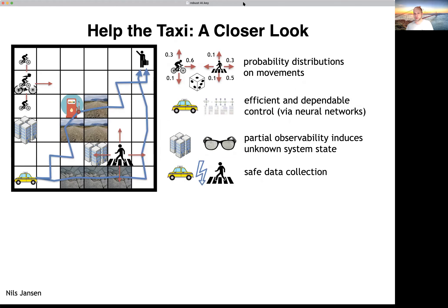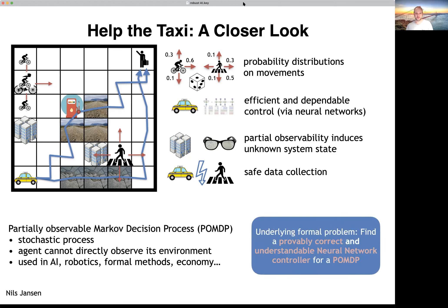We can capture such goals in temporal logic constraints or expected cost specifications, and we want both: a policy for the taxi that is safe and cost-optimal, accounting for all the randomness and partial information. We assume probability distributions on movements of cyclists and pedestrians, and we want efficient and dependable control via neural networks. The underlying model is a partially observable Markov decision process (POMDP), and the formal problem is to find a probably correct and understandable neural network controller for a POMDP.